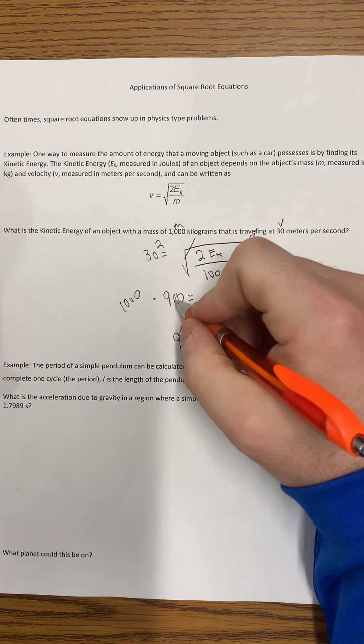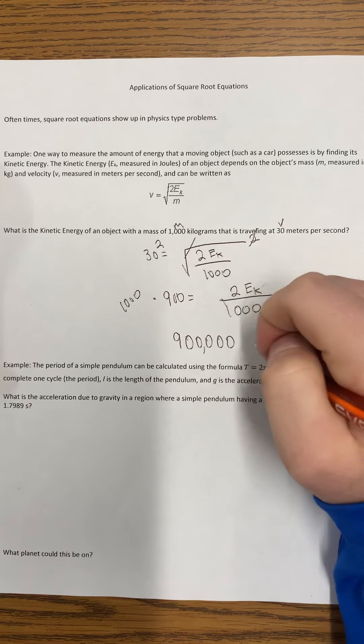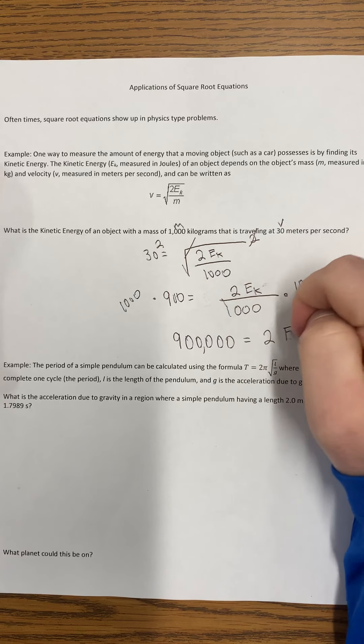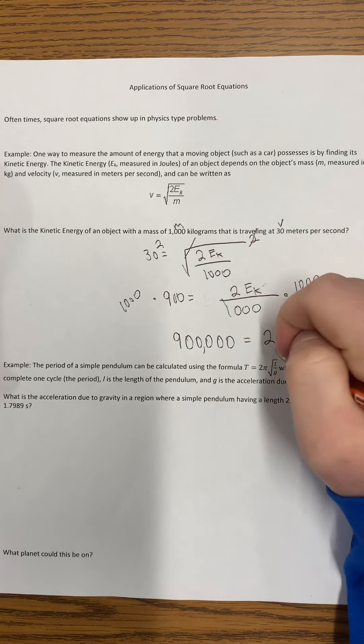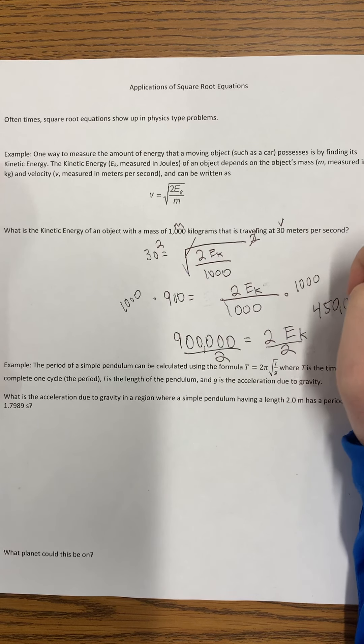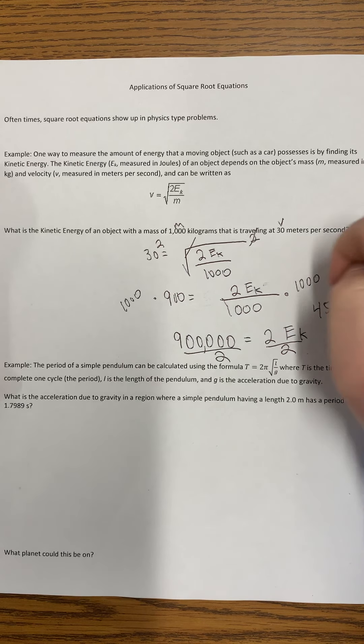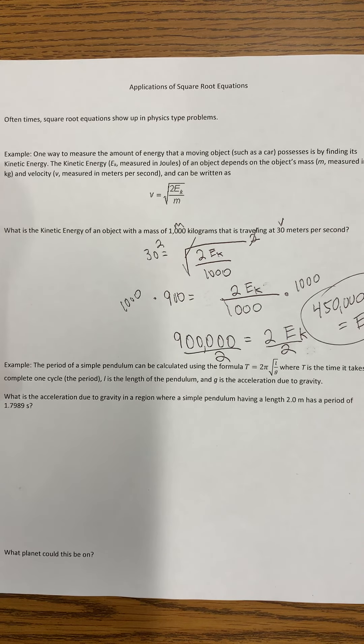We get 9 with 1, 2, 3, 4, 5 zeros. That's 900,000 equals 2 times the kinetic energy. We divide by 2. 900,000 divided by 2 is 450,000 joules, which equals the kinetic energy of this object.